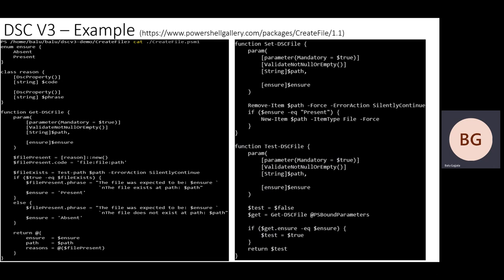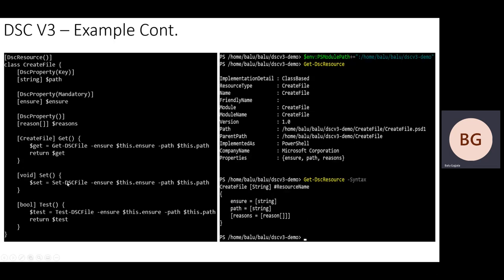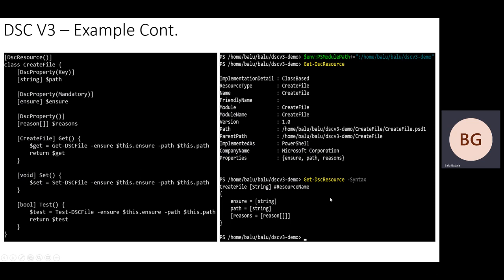If you have a script-based resource, it is just a matter of adding this wrapper class. You define a class, add the properties, and then have the three methods Get, Set, and Test that call into your existing Get-TargetResource, Set-TargetResource, and Test-TargetResource functions. To execute the DSC resource, all you need to do is set the PSModulePath to the directory containing the DSC resource, and you can verify it using Get-DSCResource. Then issue Get-DSCResource -Syntax, which will give you the properties of this class — in this case path, ensure, and reasons.